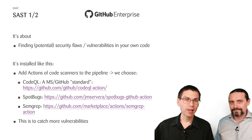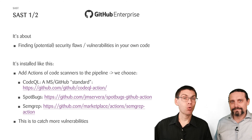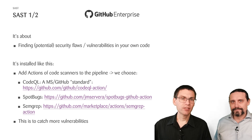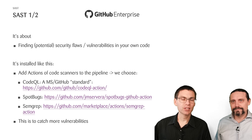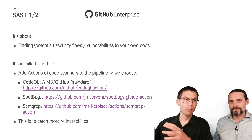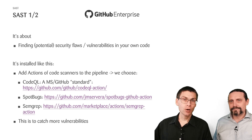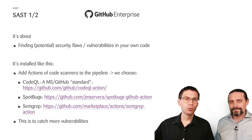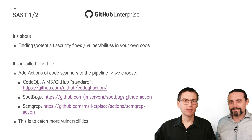To add SAST to our pipeline, we chose three actions that actually provide this functionality. Action number one is CodeQL — a GitHub standard action that statically analyzes code. It includes security checks and is provided by Microsoft. We also selected SpotBugs as a second source to detect flaws. SpotBugs is a traditional scanning tool with strength mainly in traditional code scanning. And we also added Semgrep, a relatively new product designed to find and detect code vulnerabilities.